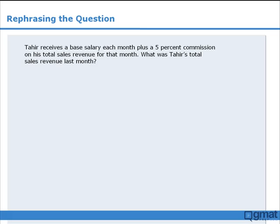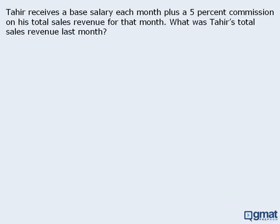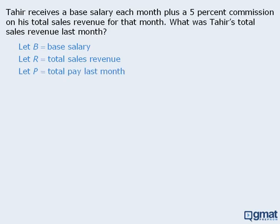In the previous lesson, we examined a question where Tahir receives a base salary plus a 5% commission on his total sales revenue. We summarized the information by letting B equal Tahir's base salary, R equal his total sales revenue last month, and P equal his total pay last month. Since his commission is 5% of his total sales revenue, Tahir's commission for any given month is equal to 0.05 times R.